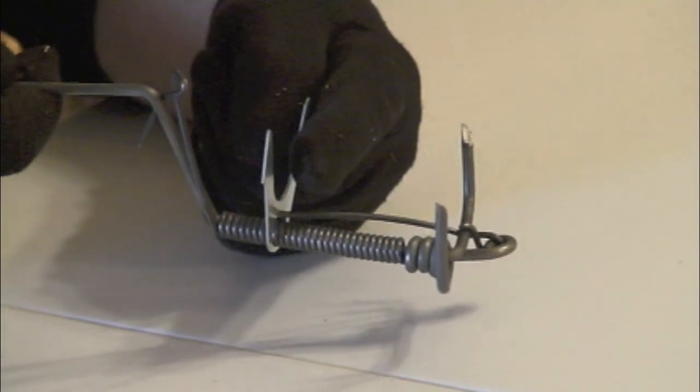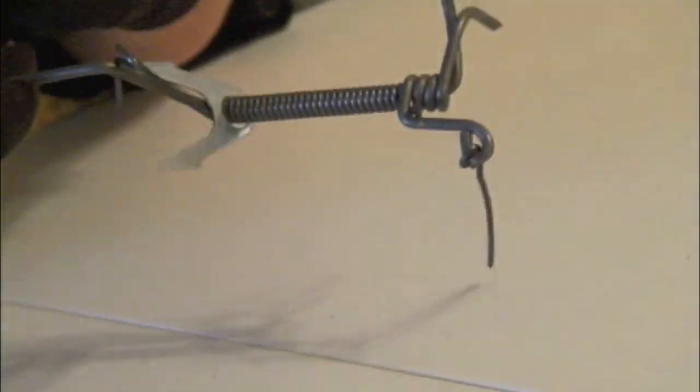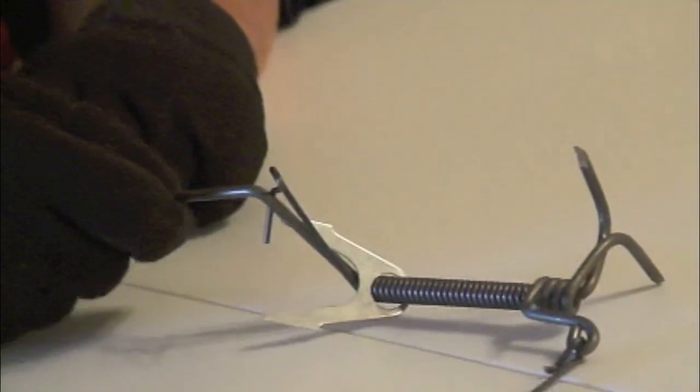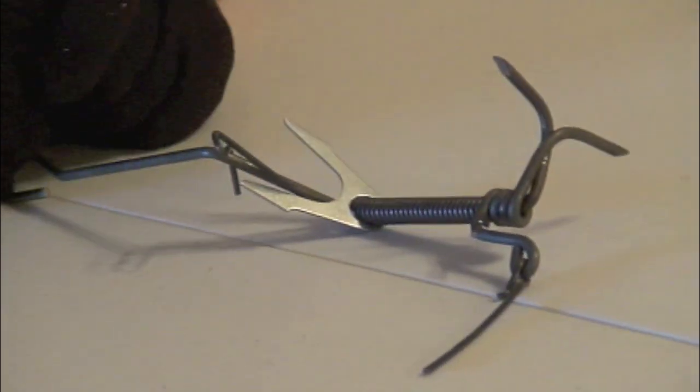And as he comes through here, his head or the dirt, whichever gets there first, will hit this and the gopher is caught. And that's the way the DK1 gopher trap works.